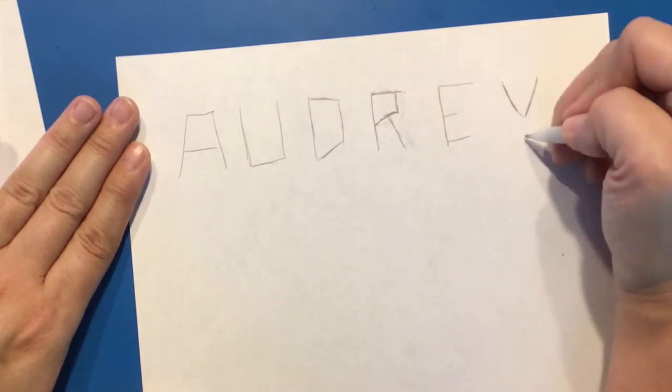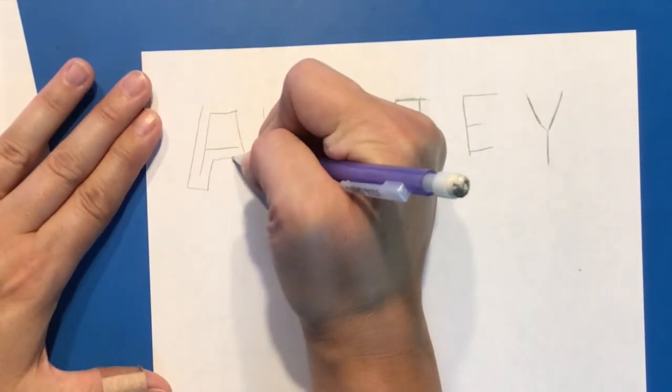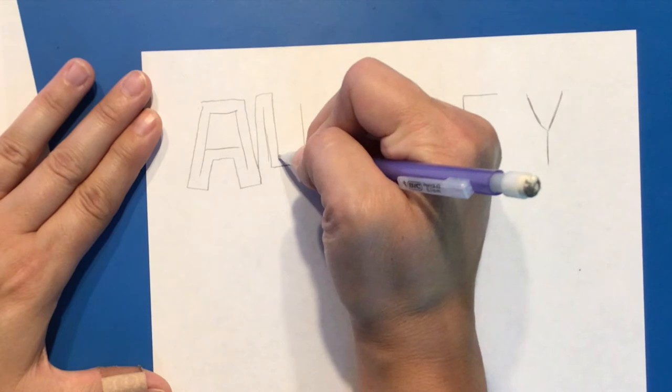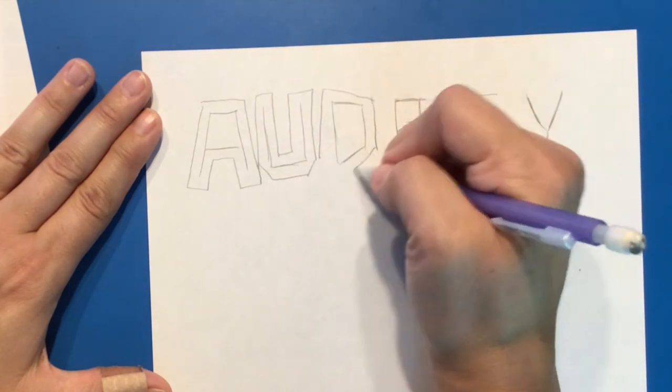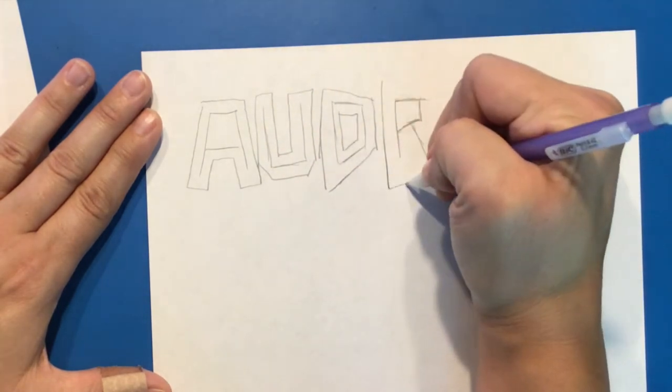Once I have all of my letters mapped out with my stick letters, I leave the stick letters and I draw a block outline with a little bit of space on the outside.